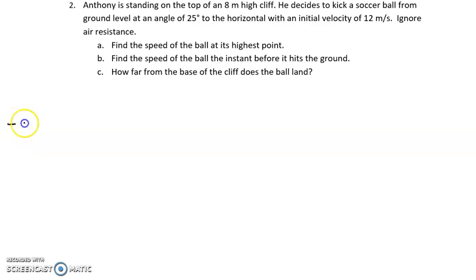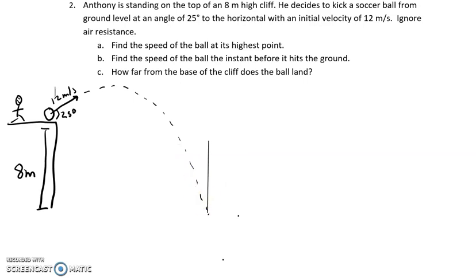Let's see, we have a cliff that is 8 meters tall. We have Anthony, and we'll draw a little Anthony. He decides to kick a soccer ball at 12 meters per second at a 25 degree angle to the horizontal. So we got our picture. I'm going to go ahead and draw what the motion of this would be. It goes from there to there.